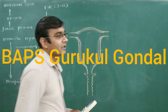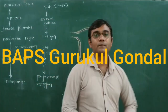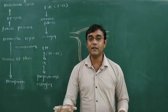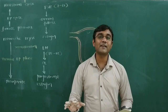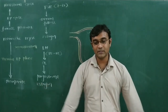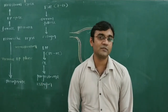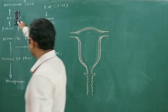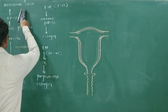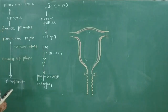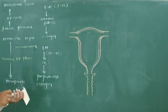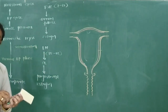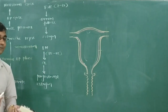In the female reproductive system, we completed the ovarian cycle and the oogenesis procedure simultaneously. Now the next topic is the menstrual cycle.